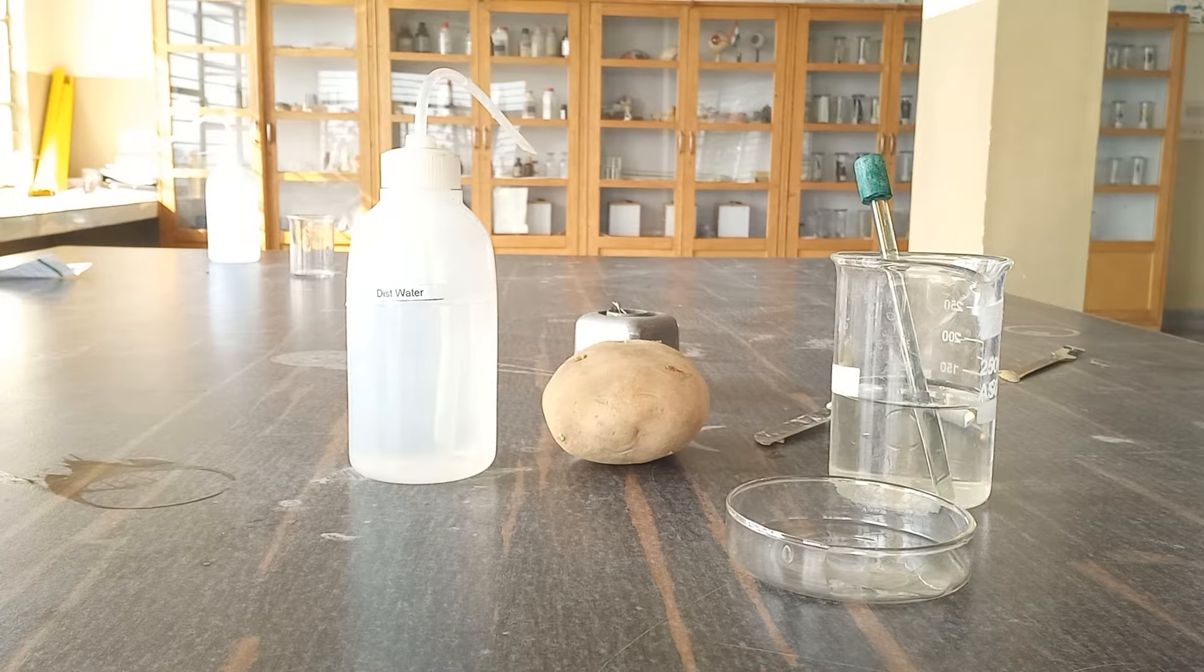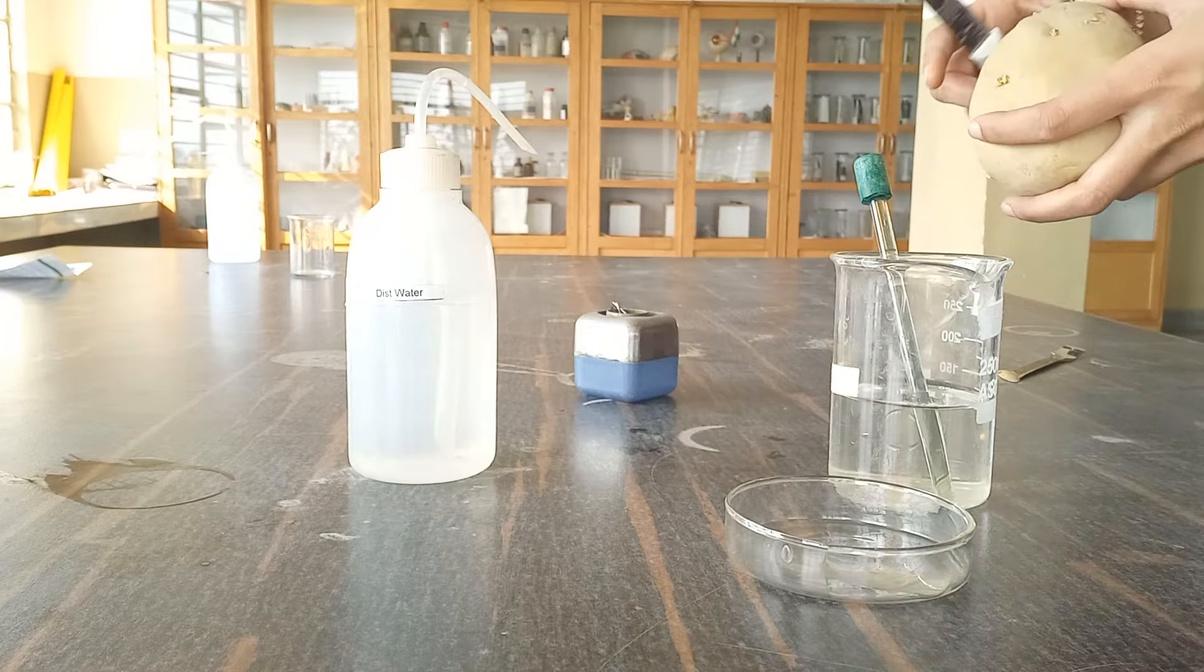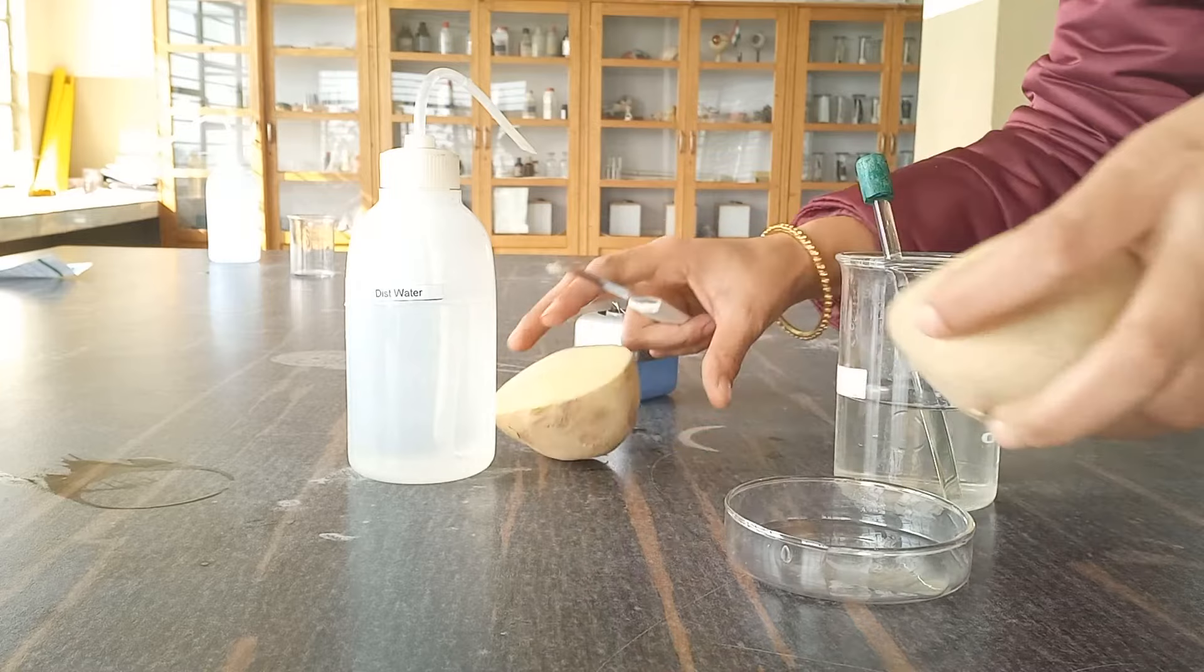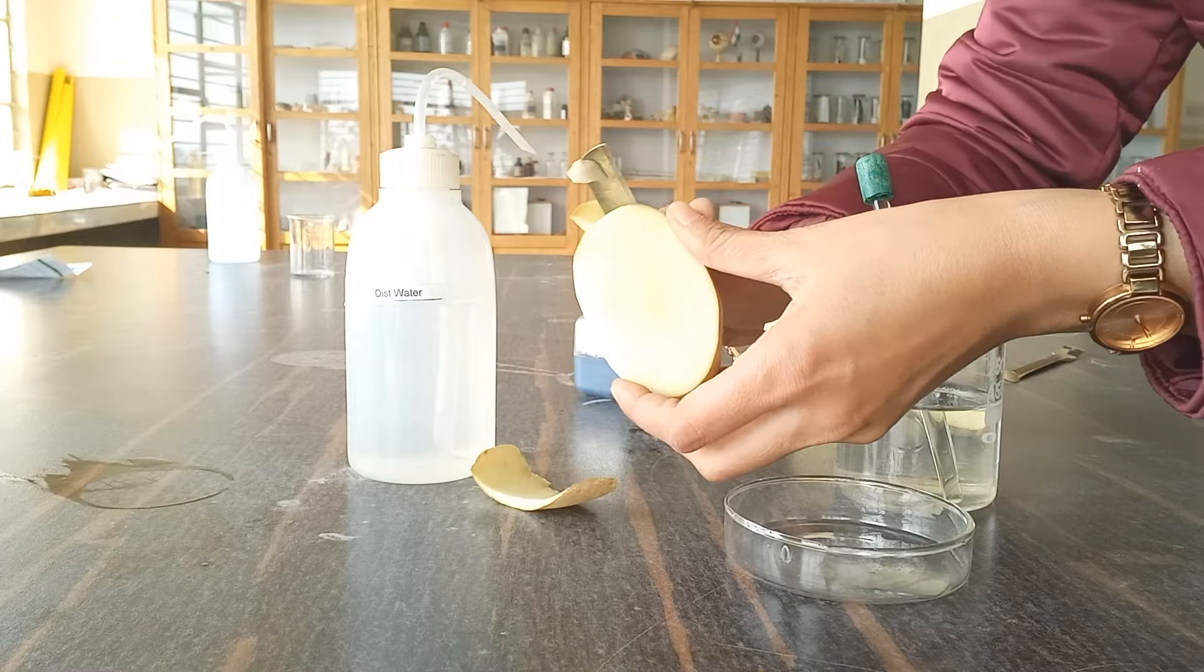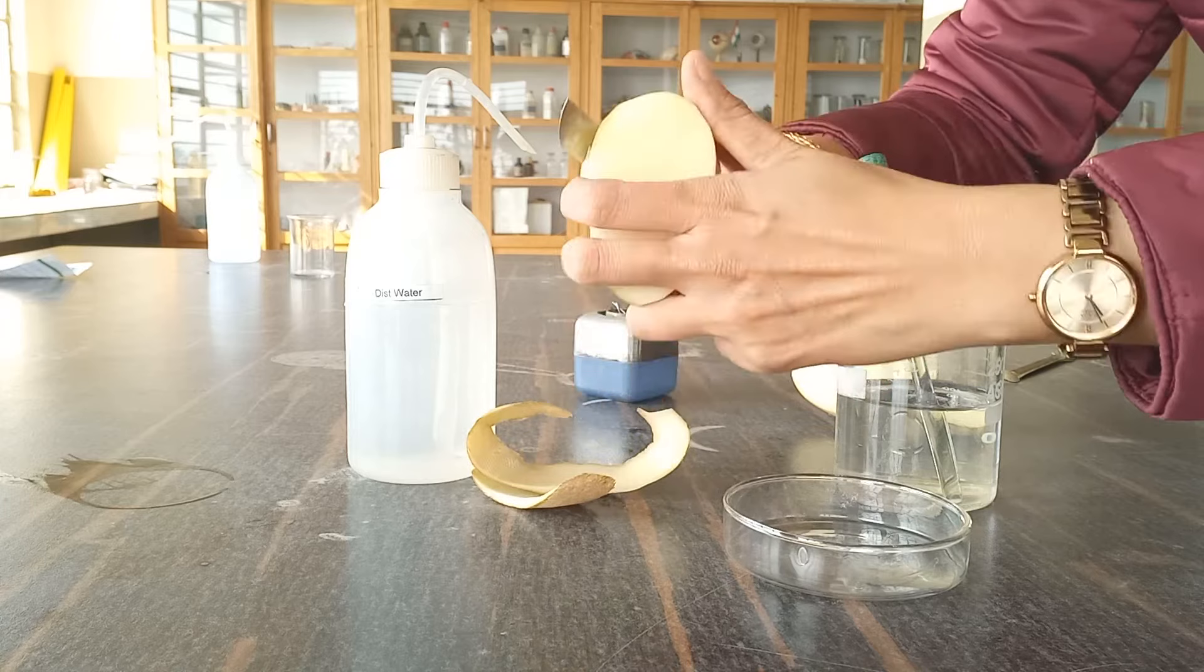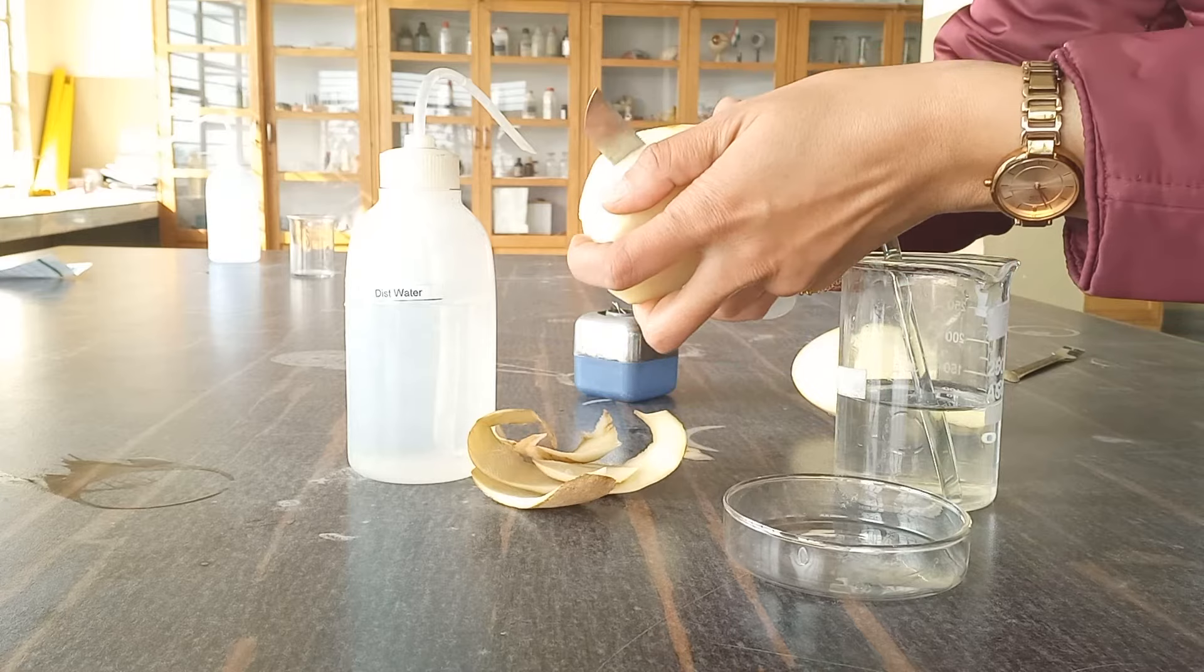Here we are going to start with the procedure. We are going to make a cavity from this potato. So in this way we are going to peel it off first. And after peeling it off, we are going to make a flat base. This way.